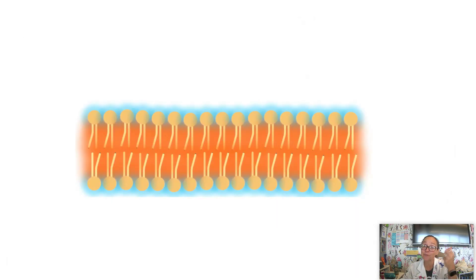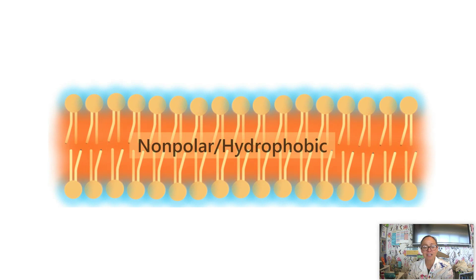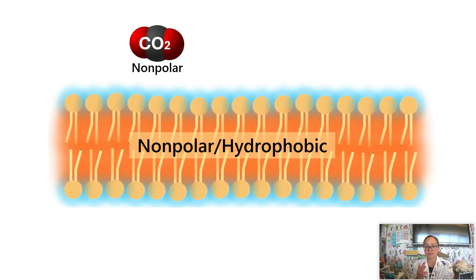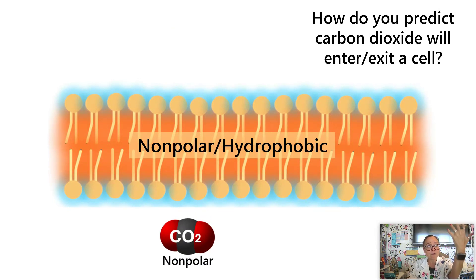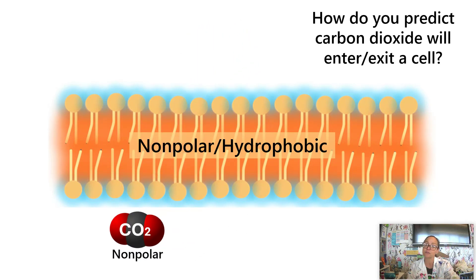Let's connect what we previously learned about the hydrophilic polar and nonpolar areas of a membrane and how that influences what may or may not be able to pass through the cell membrane. We're focusing on the nonpolar hydrophobic region made of fatty acid tails — lipids are nonpolar. Carbon dioxide is nonpolar, so it can diffuse right through that nonpolar hydrophobic region. Similarly, oxygen is also a nonpolar gas and passes directly through the fatty acid nonpolar region of a plasma membrane.